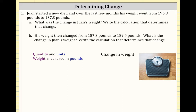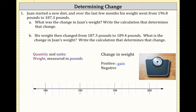What we're looking at is the change in Wan's weight. Change could be either positive or negative. When we think about a positive change, we think of a gain. You can imagine a number line where you're starting at 190 pounds and gaining weight — that would mean moving to the right on the horizontal number line, indicating a gain.